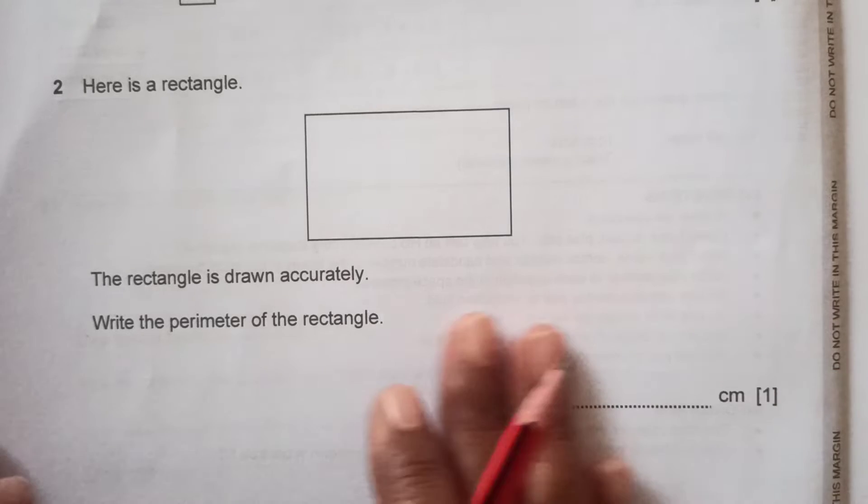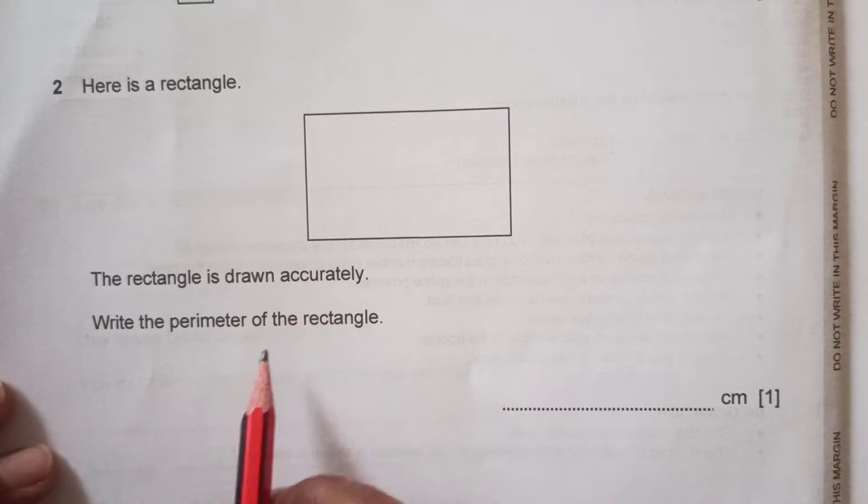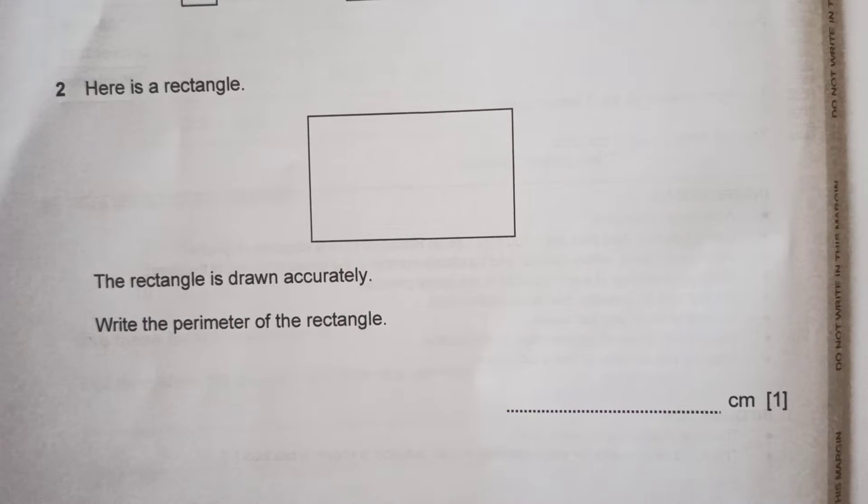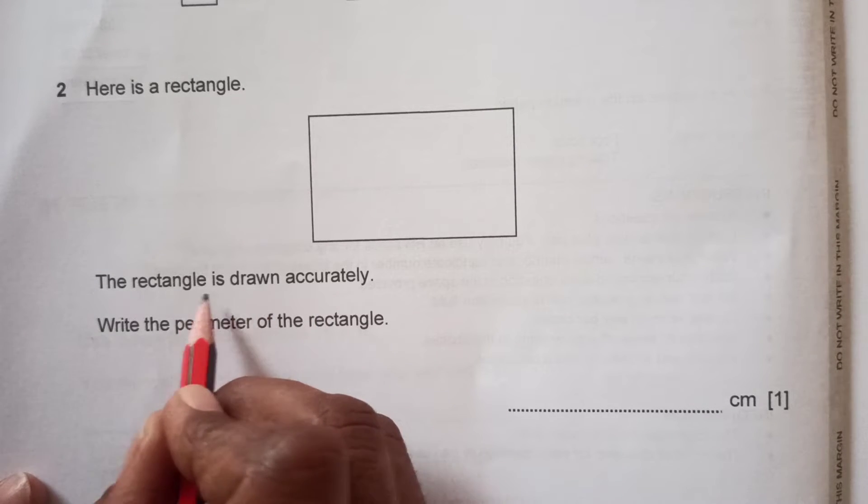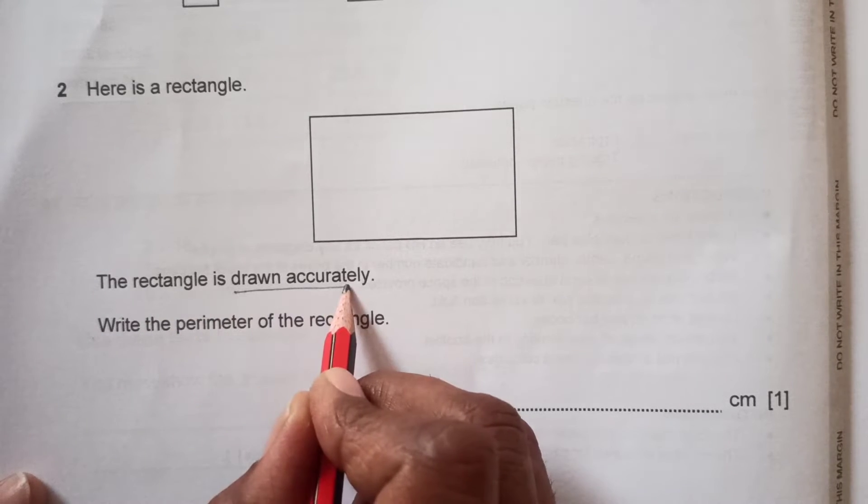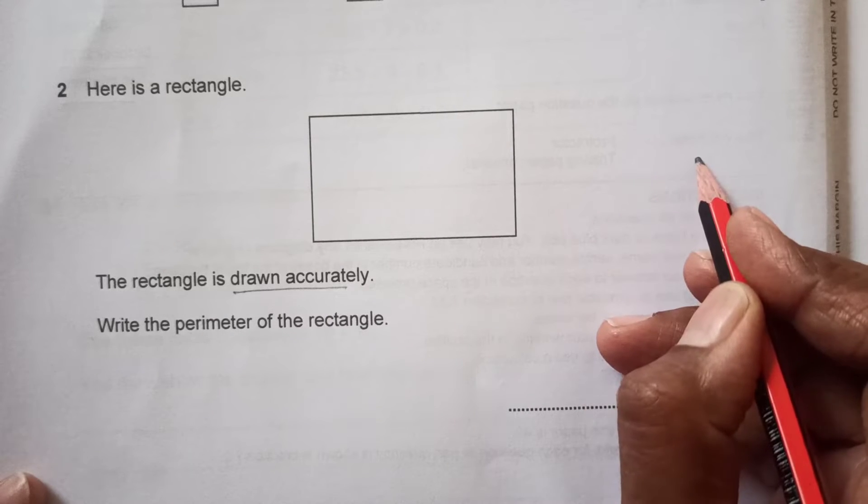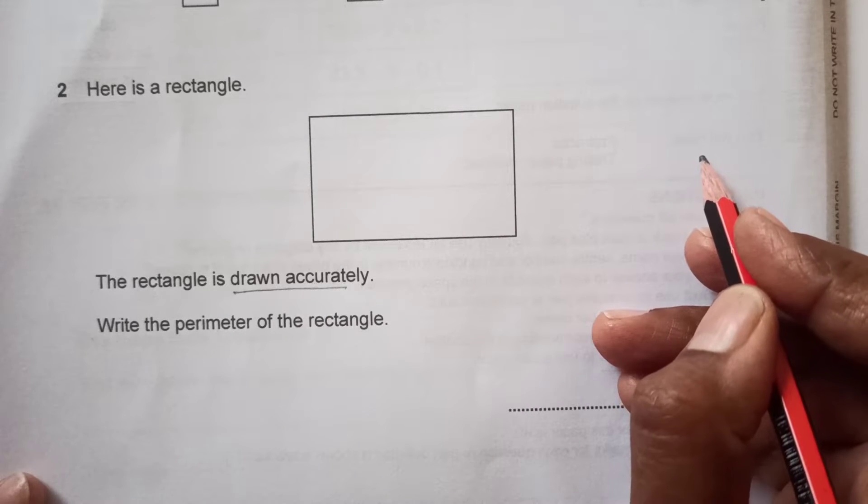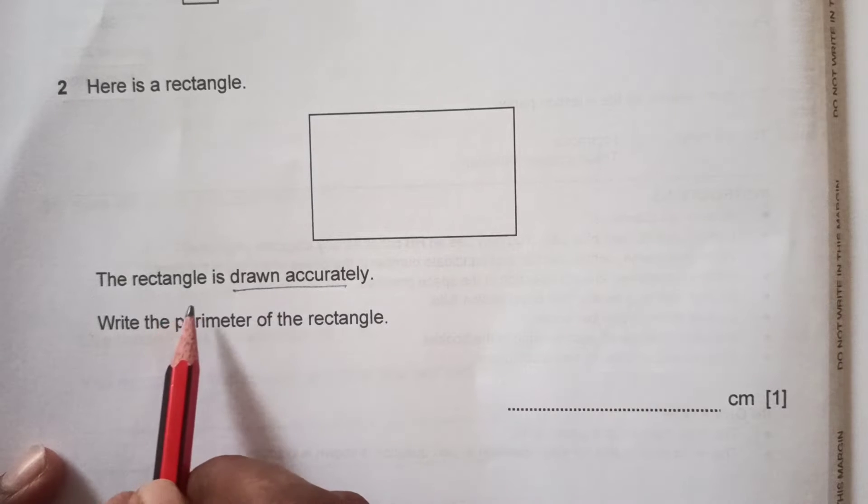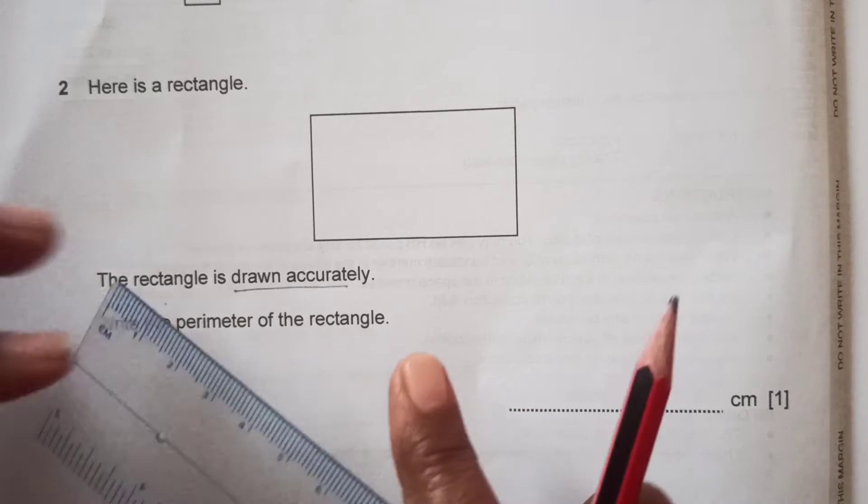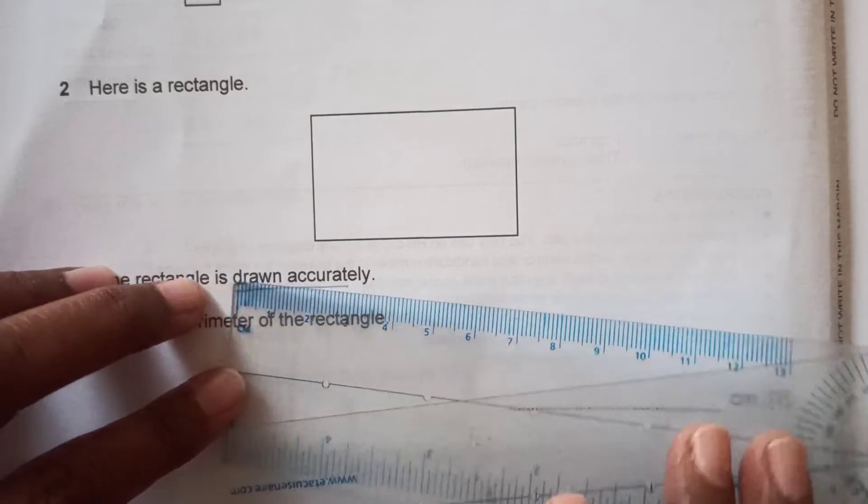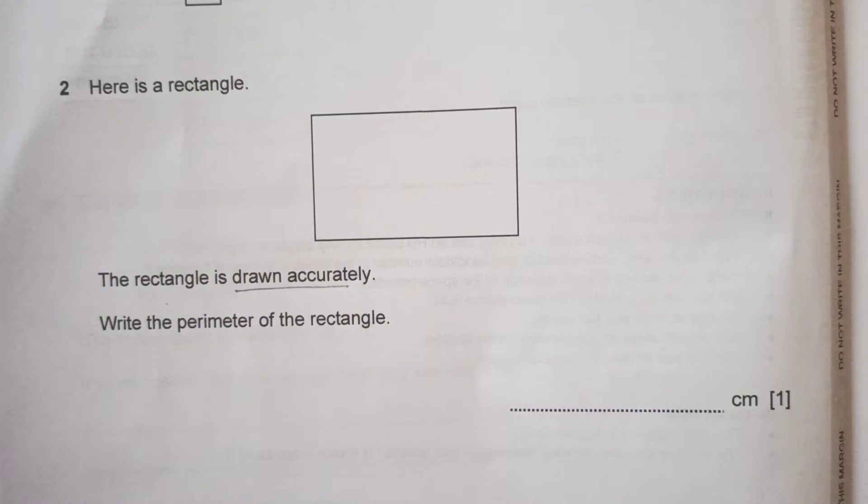Now, here is a rectangle. The rectangle is drawn accurately. Usually they write here 'not to scale' - not to scale means then you cannot measure that. Now it says the rectangle is drawn accurately, so we can just measure the side here.